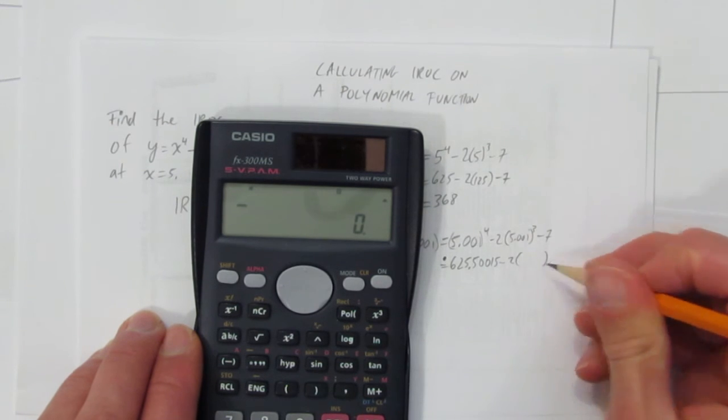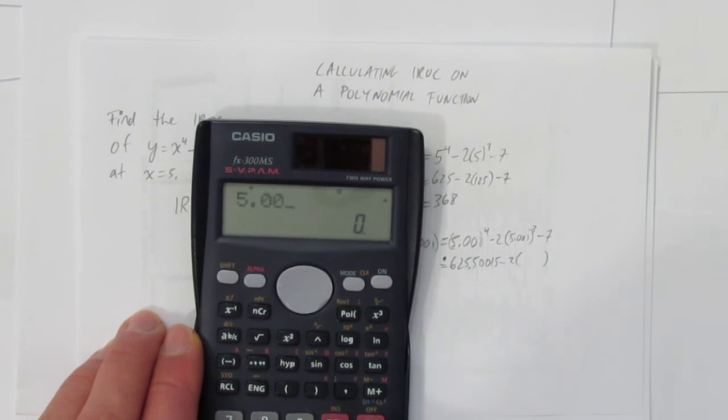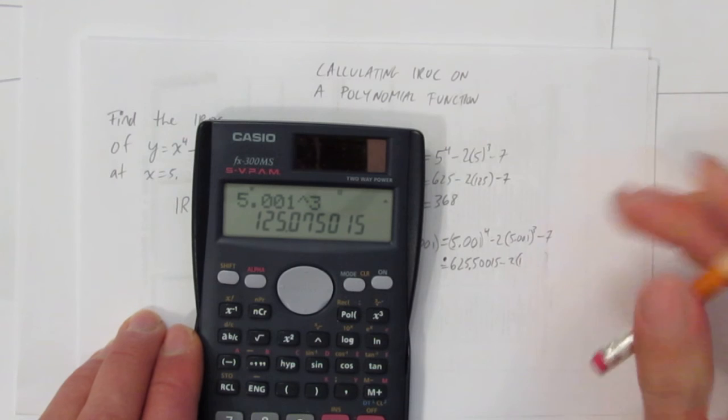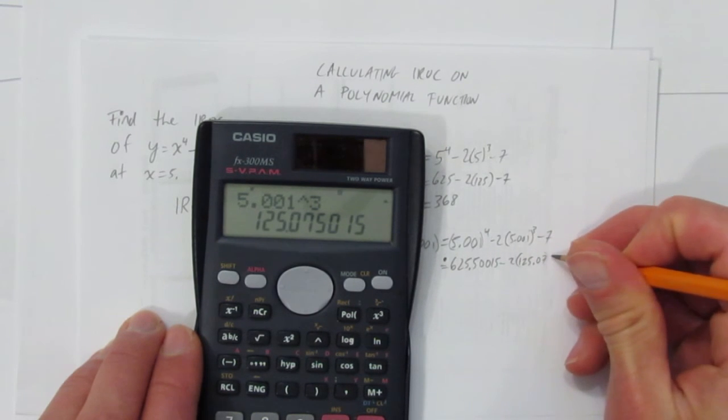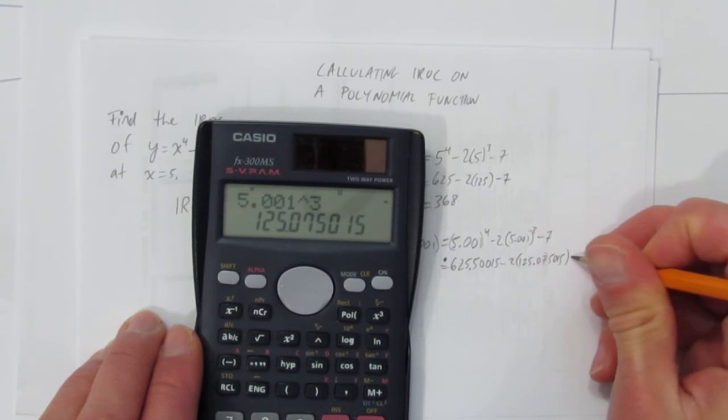Minus 2 times, what's 5.001 to the power of 3. Same thing. We're going to need more space, though. Calculator definitely rounded here. 125.075015, take away 7.